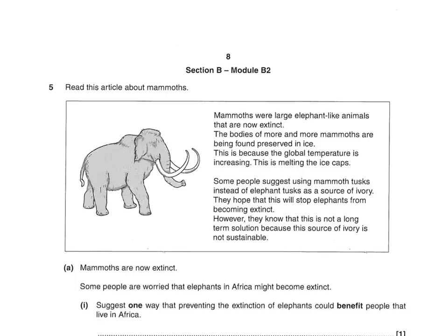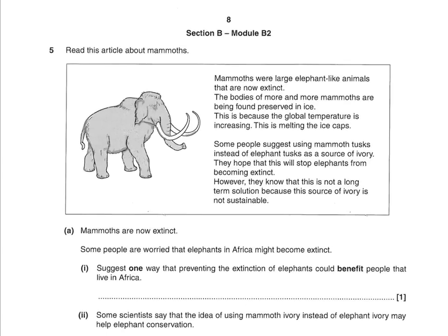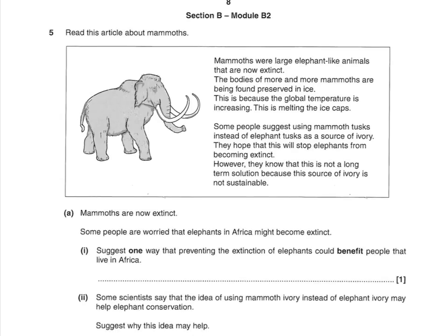The first question is in the biology section. Read this article about mammoths. Mammoths were large elephant-like animals that are now extinct. The bodies of more and more mammoths are being found preserved in ice. This is because the global temperature is increasing and melting the ice caps. Some people suggest using mammoth tusks instead of elephant tusks as a source of ivory. They hope this will stop elephants from becoming extinct. However, they know this is not a long-term solution because this source of ivory is not sustainable.